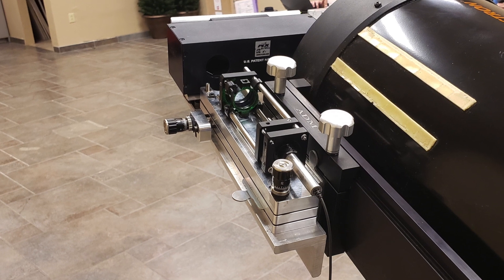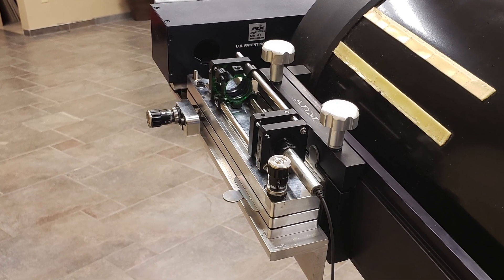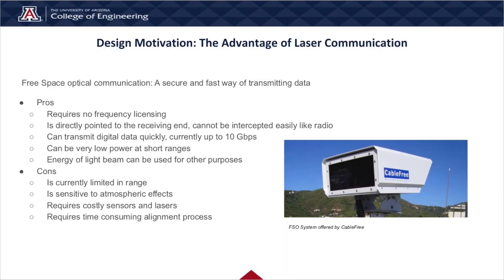The system was more than capable of meeting the 10 arcseconds alignment error within four iterations, while maintaining repeatability and ease of use. Free space optical communication is a rapidly developing technology which provides several benefits over traditional communication services such as radio or fiber optic cable. It requires no frequency licensing and can transmit digital data quickly. However, it is currently limited in range and requires a time-consuming alignment process.